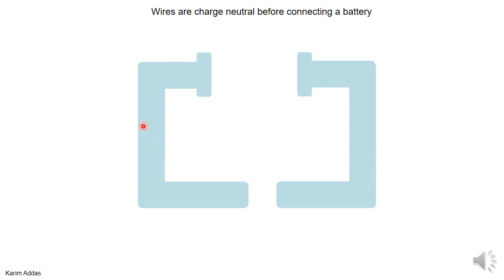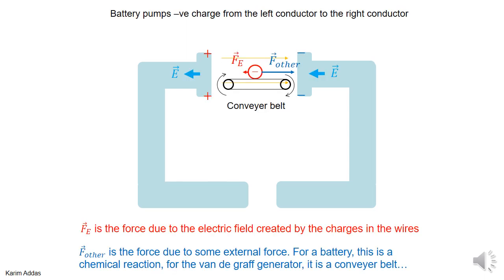We'll first put a battery with the gap open and see what happens, then close the gap and see how an electric field is established in the circuit. Let's imagine a strange battery with a conveyor belt — something rotating that grabs negative charges from one side and delivers them to the other.